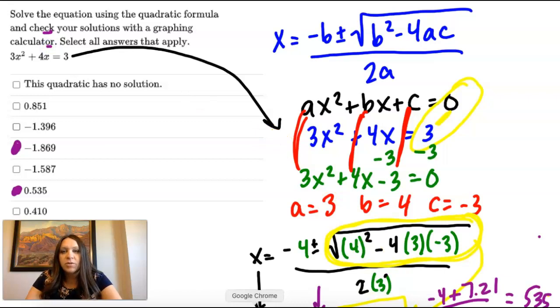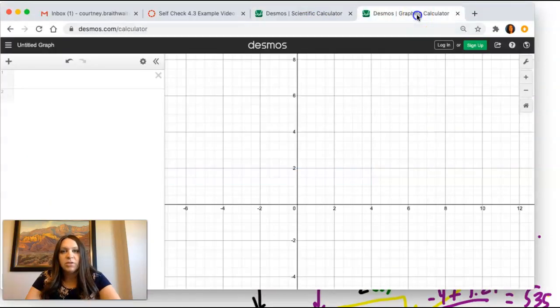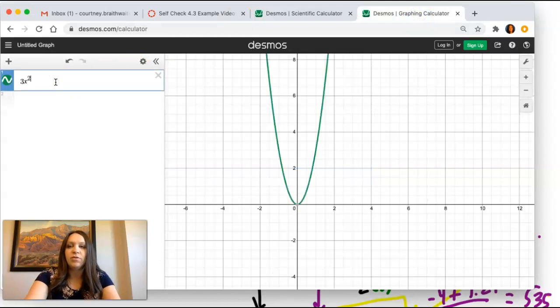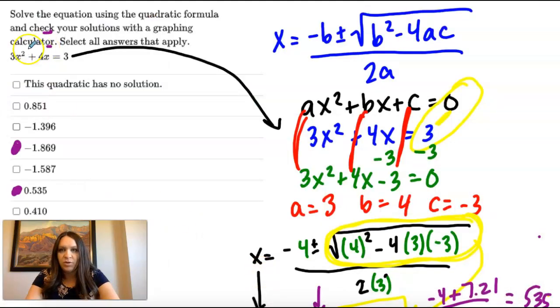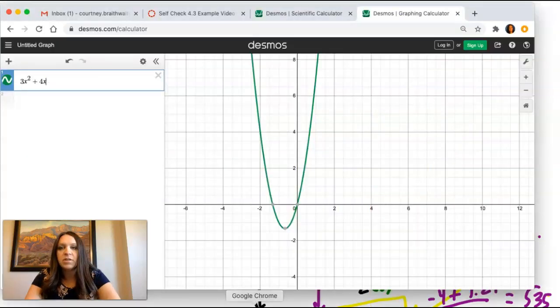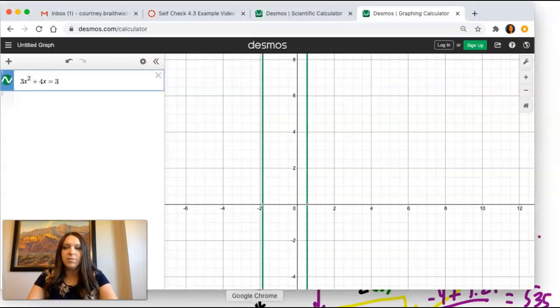So I'm going to go to Desmos graphing, which is a different calculator. 3x squared plus 4x. You can put equals 3 or we can put our standard form in there. It doesn't matter.